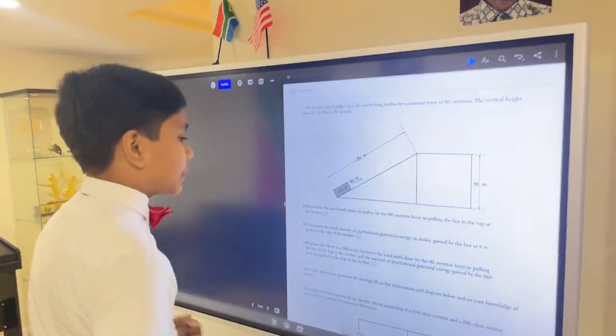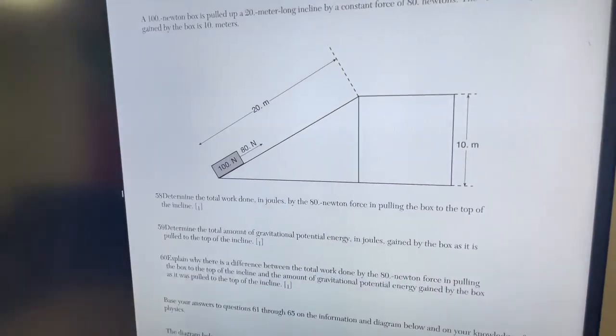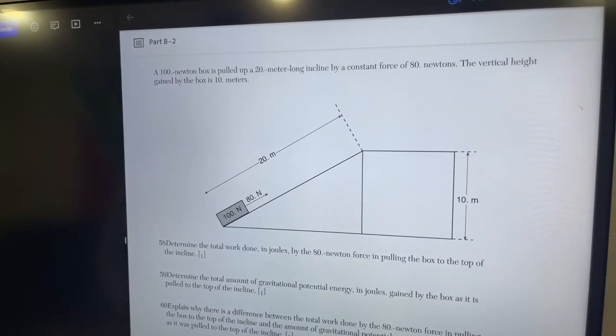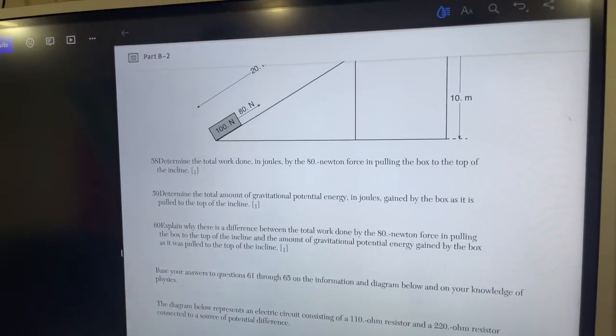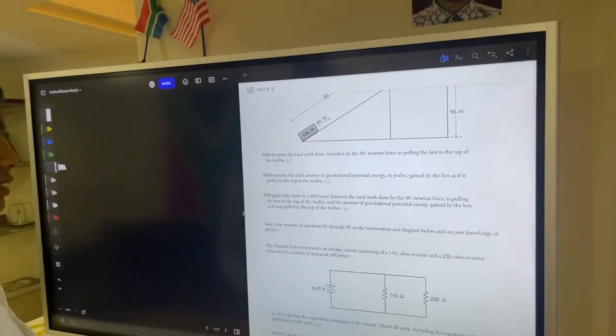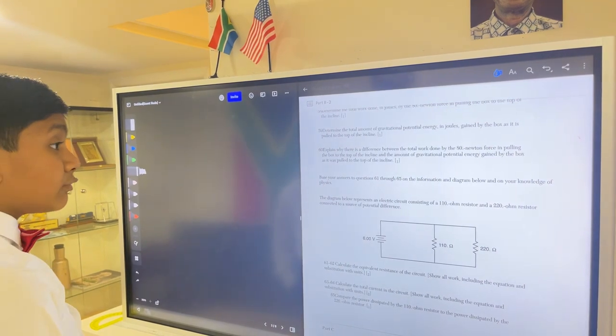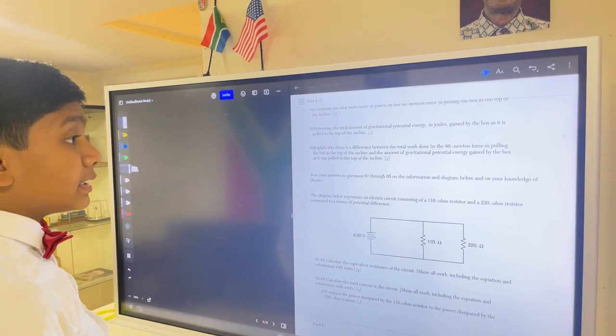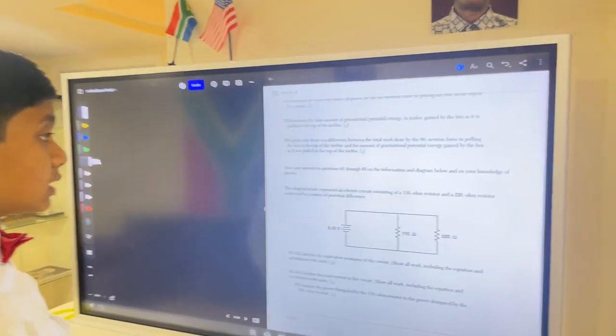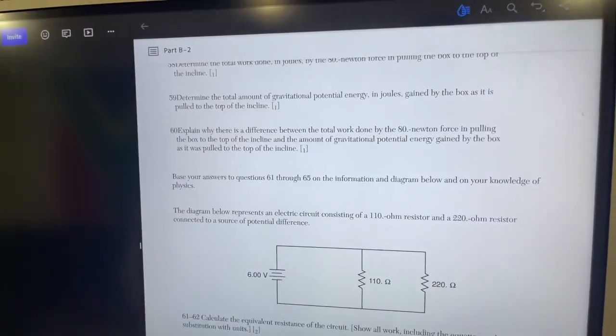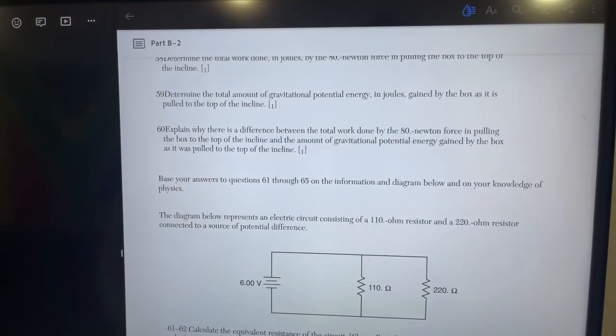Determine the total work done in joules by the 80 Newton force. Read it nicely. In pulling the box to the top of the incline, determine the total amount of GPE in joules gained by the box as it is pulled to the top. Can you read it nicely? Explain why there was a difference between the total work done by the 80 Newton force in pulling the box to the top and the amount of GPE gained by the box as it was pulled to the top.